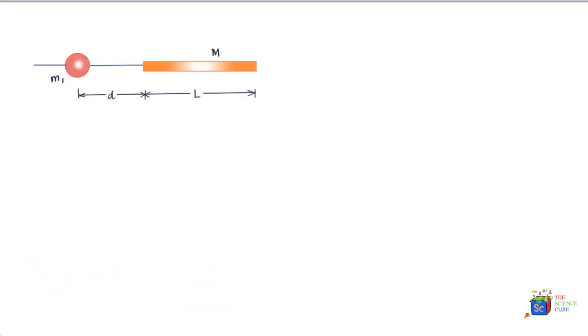So what we have in this problem is a long rod of length L and mass M which is at a distance D from mass m1. Rather, the left edge of the rod is at a distance D from mass m1. And the question is, what is the force of gravitation on mass m1 on account of the rod?